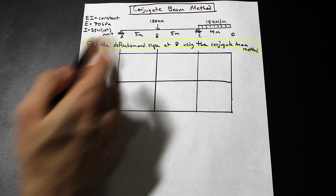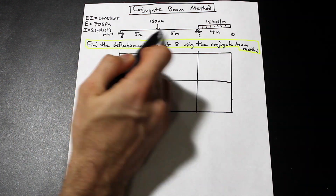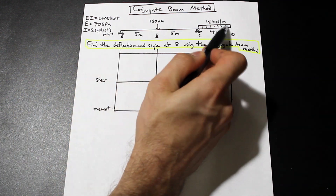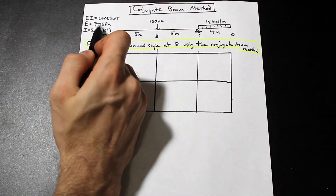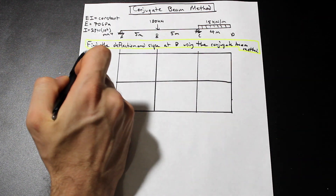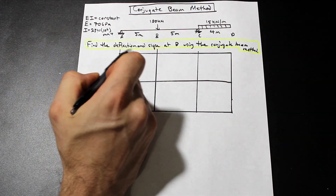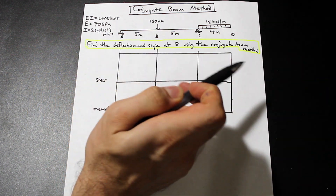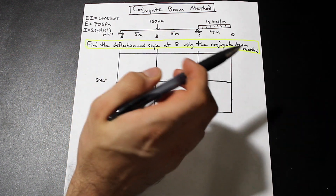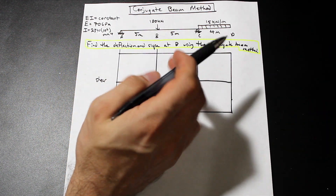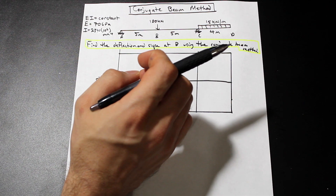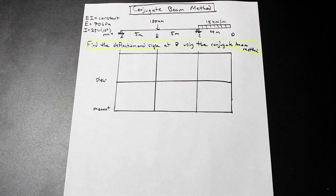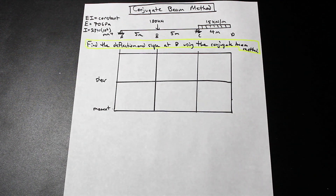So we're given a beam here — we have a point load and a distributed load, and we're given E and I. We're asked to find the deflection and slope at D using the conjugate beam method. If you want an introduction to the conjugate beam method, go to the previous video — I'll put a link in the description.